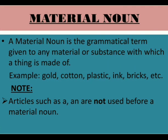Now let's move on to material noun. A material noun is a grammatical term given to any material or substance with which a thing is made of. The material used to make any object is placed under the category of material noun. For example, we use gold or silver to make jewelry, so gold and silver come under material noun. We use cotton or wool to make clothes, so cotton and wool are material nouns. Similarly, plastic, ink, bricks — these all are examples of material noun.